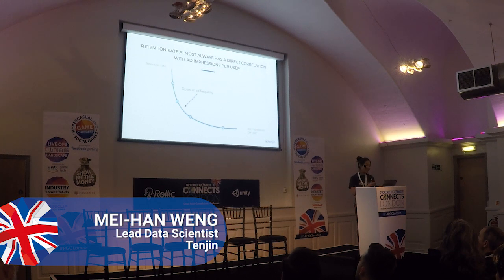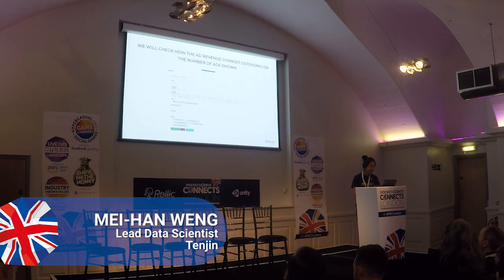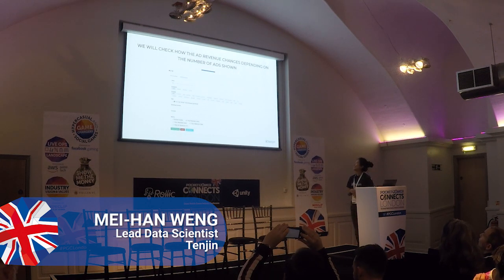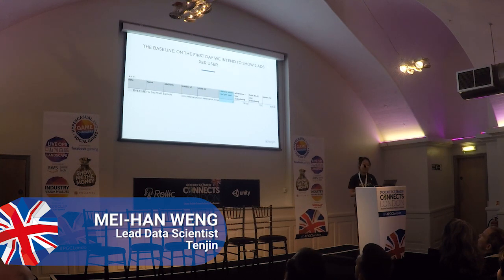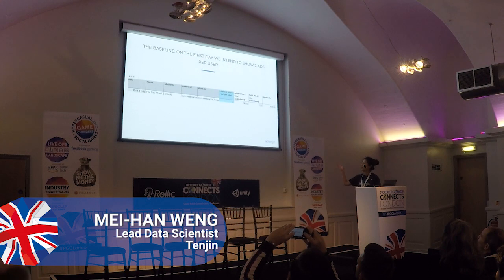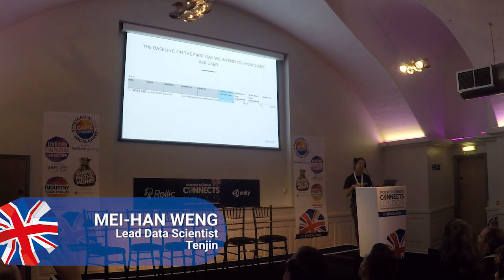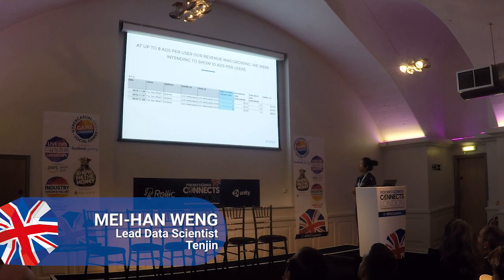To conduct this analysis you need to pull some data. This is how our data exporter looks — it's simple but it works. You can select any metrics you want. After getting all your data, you can plug it into our spreadsheet — we'll share the link, it's free. There will be one tab where you put the data downloaded from the data exporter, and another sheet where you can run your tests. Focus on the column 'intend to show X ads per user,' which is where you adjust the number to conduct your test.